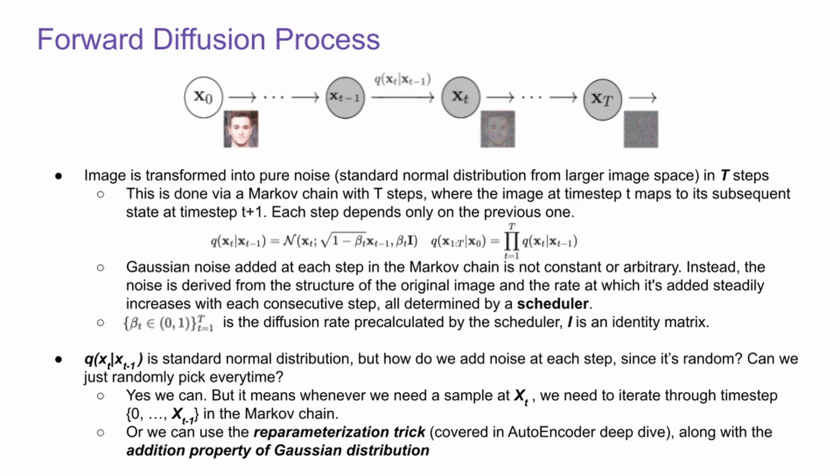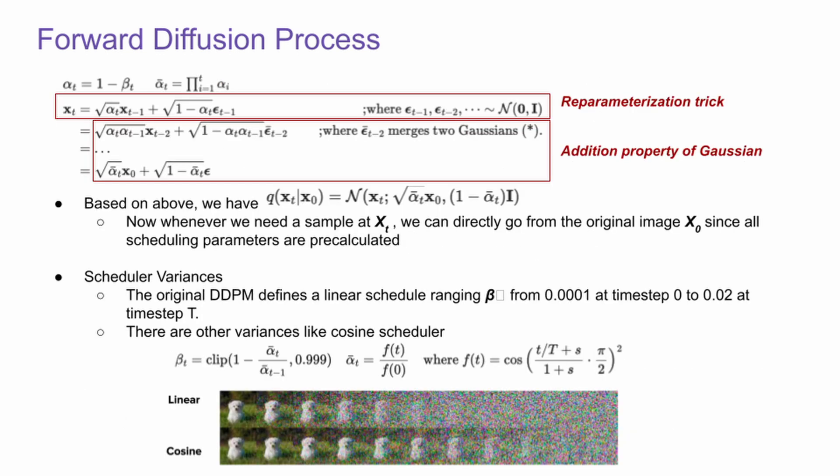So q(xt|xt-1) is a normal distribution depending on the schedule beta_t. And there's a clever trick here for noise sampling. We use the reparameterization trick along with the additional property of Gaussian distribution. Based on the above math, we can get q(xt|x0) equals to this normal distribution.